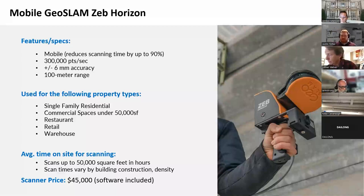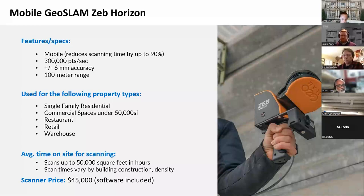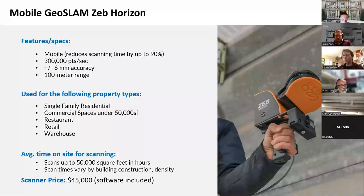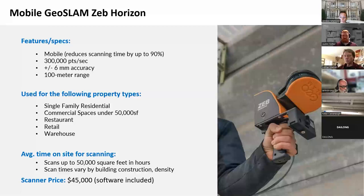The Horizon collects 300,000 points per second with a six-millimeter level of accuracy — you can't beat this with the traditional method, especially on large projects. It covers a range of 100 meters and you can scan up to 50,000 square feet of space in just a few hours. You can use it to scan pretty much anything that's visible — we've used it for single-family and commercial projects, restaurants, retail, warehouses, and rehabilitation projects like the Apollo Merle restoration in South Beach and historic renovation projects in the DC and Annapolis areas.